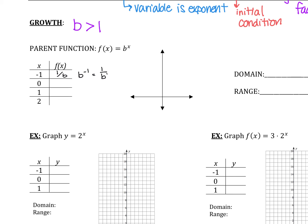If I plug in 0, what is b to the 0 power? It's 1 — anything to the 0 power is 1. That's the best point that we have.